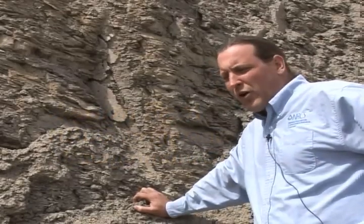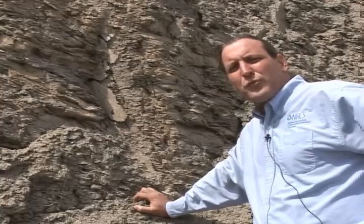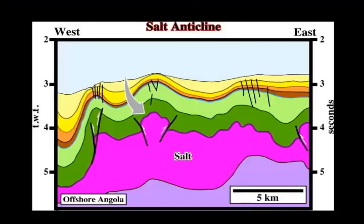One cause of salinity is what's called a salt anticline, and those occur deeper in the earth when overlying rocks compress down on a buried salt layer and help force it up to the surface.